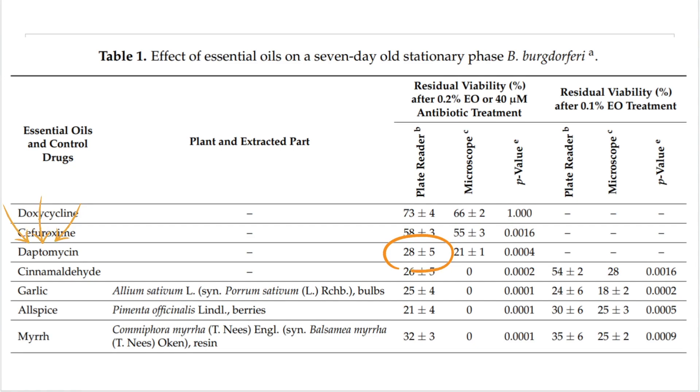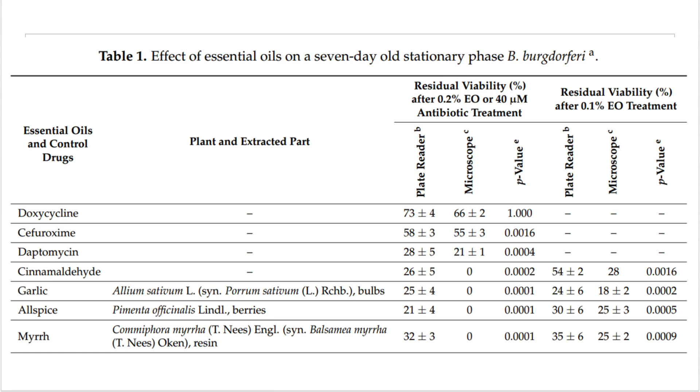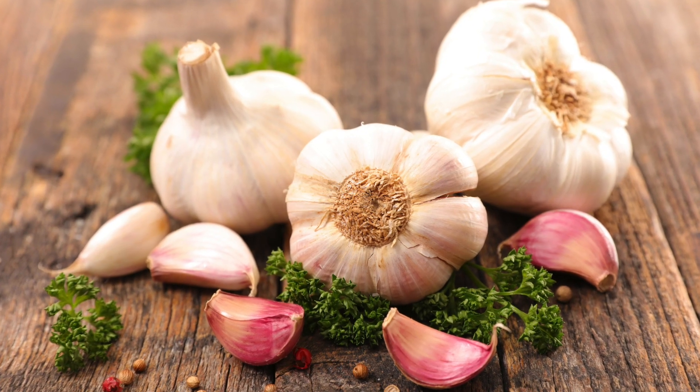And notice some of the natural things that they're showing in this study, like garlic, show very, very good results. And this is one reason why we think using herbs, things like garlic, can be a very effective part of a protocol to heal from chronic Lyme.